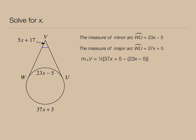I'm going to distribute that negative sign. I'm going to combine like terms. I'm now going to distribute. Take half of 14x and then half of 10. And I also set that equal to the given expression for angle V, which is 5x plus 17. Now it's a matter of solving for x. I'm going to subtract 5x from both sides of the equation and subtract 5 from both sides of the equation. I get that x equals 6.